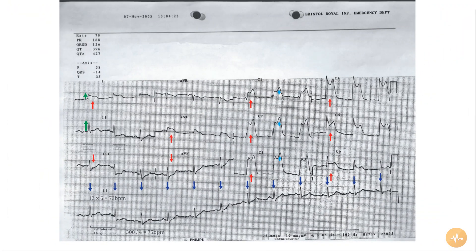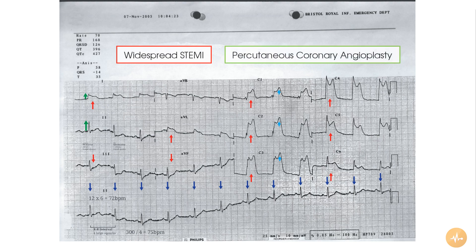In summary, this 12-lead ECG recorded from a patient with chest pain shows evidence of widespread ST segment elevation throughout the chest leads. The patient is having a STEMI and should be treated with PCI as a matter of emergency.